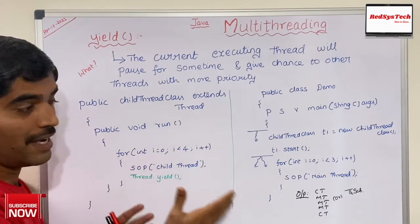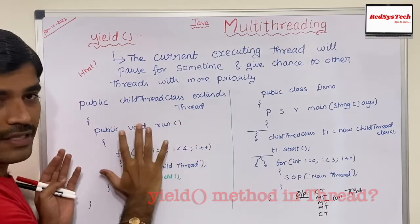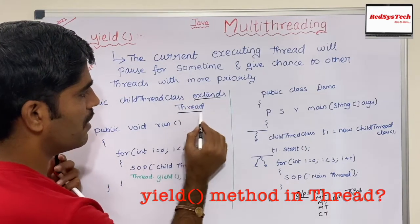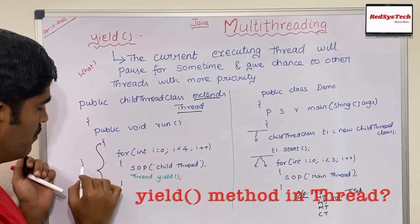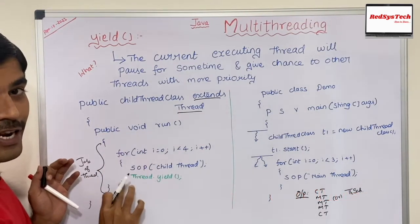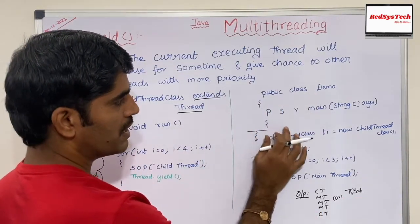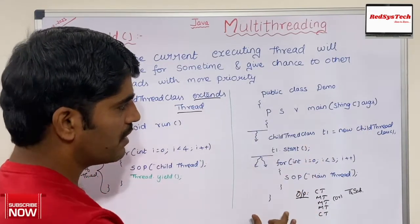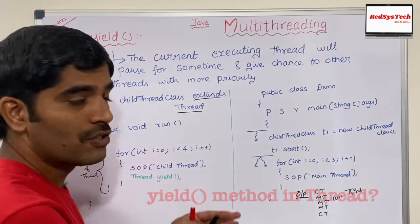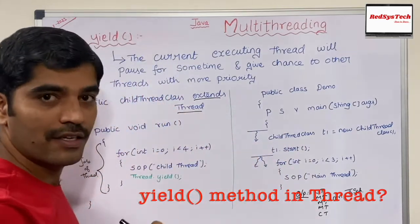I've written a program to explain this which I'll execute in Eclipse. The program has a ChildThread class that extends Thread — this is a threaded class. Inside it there is a run method, which is the job of the thread. Whatever you write inside the run method is the job that thread will execute. This is the threaded class, and there's also a main class called Demo.